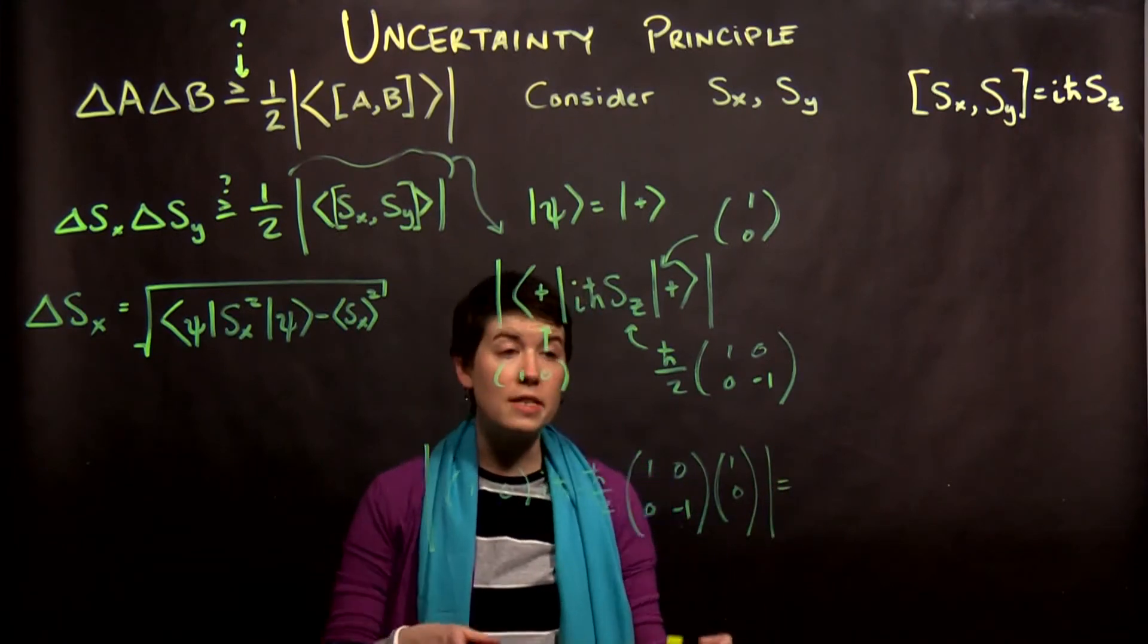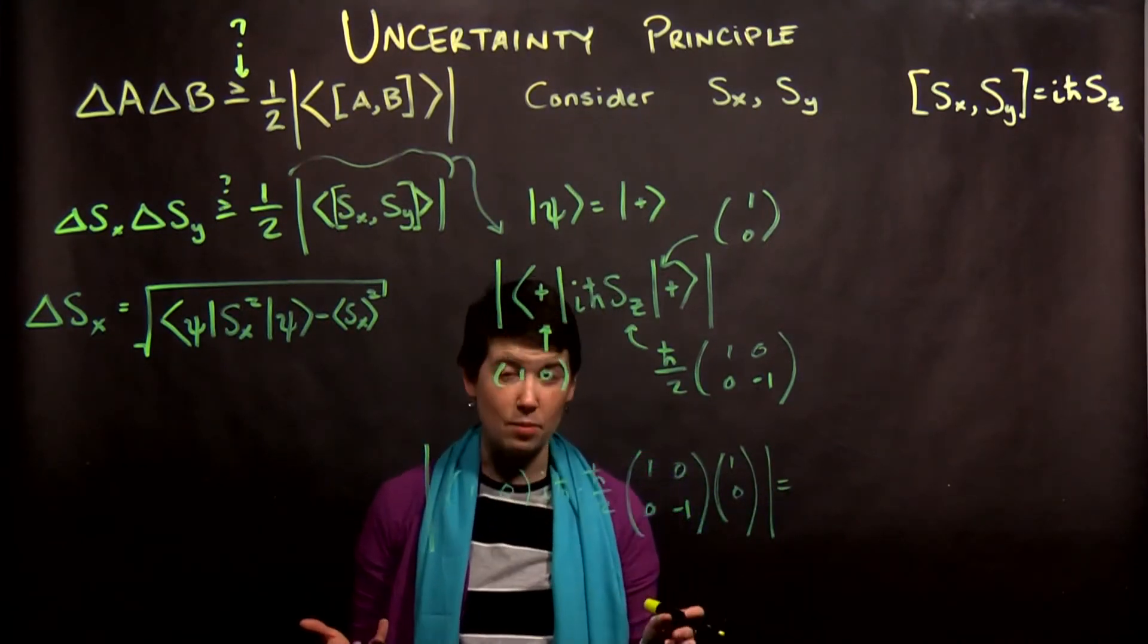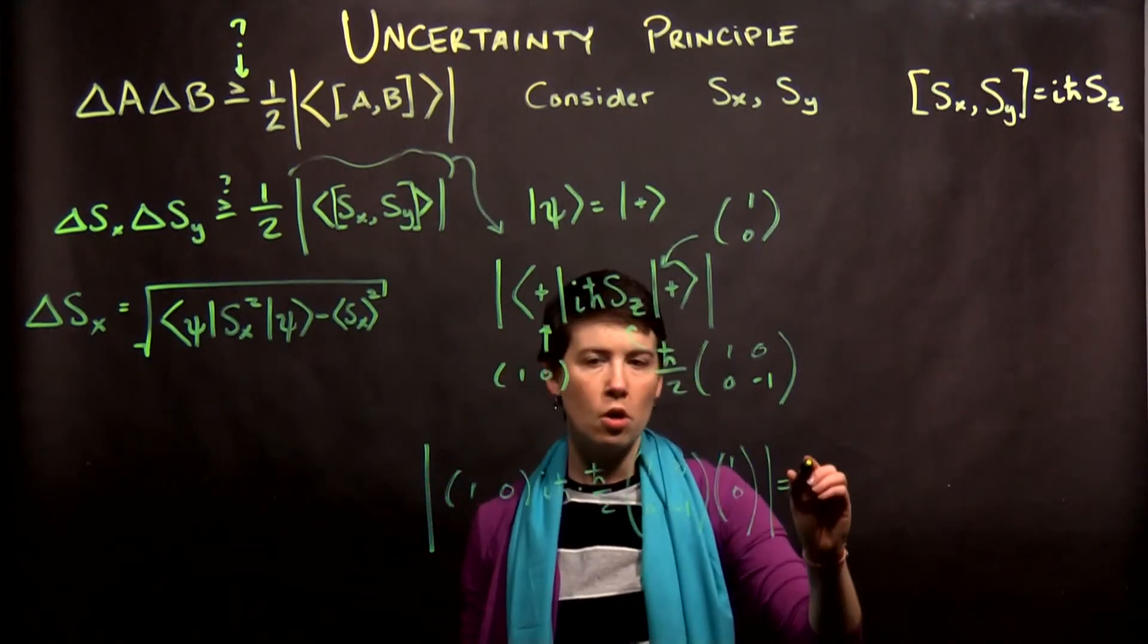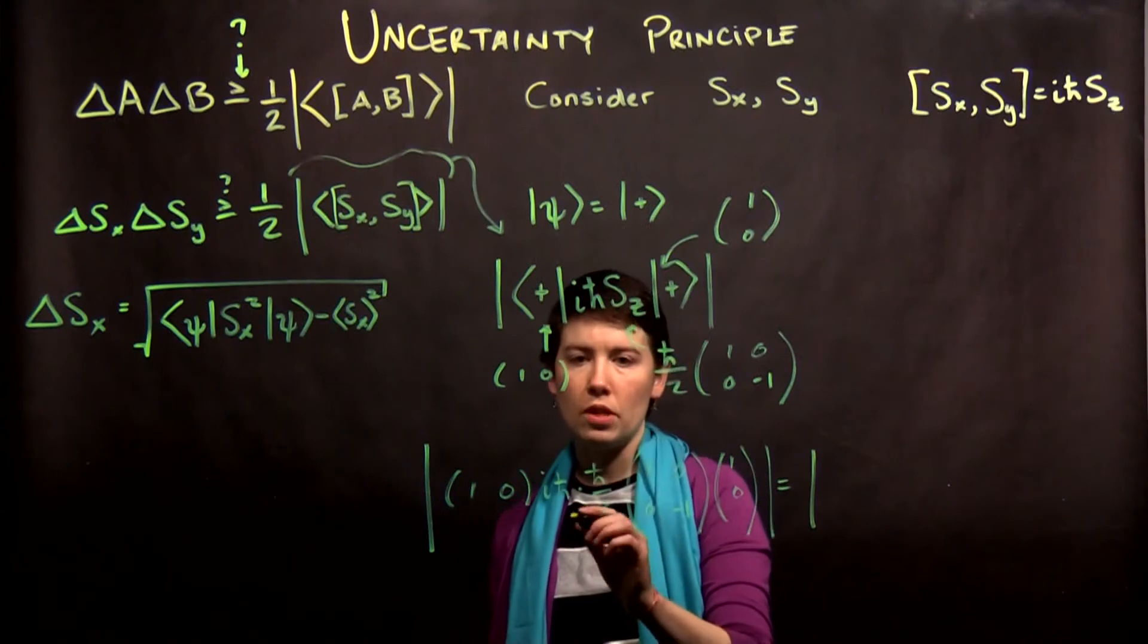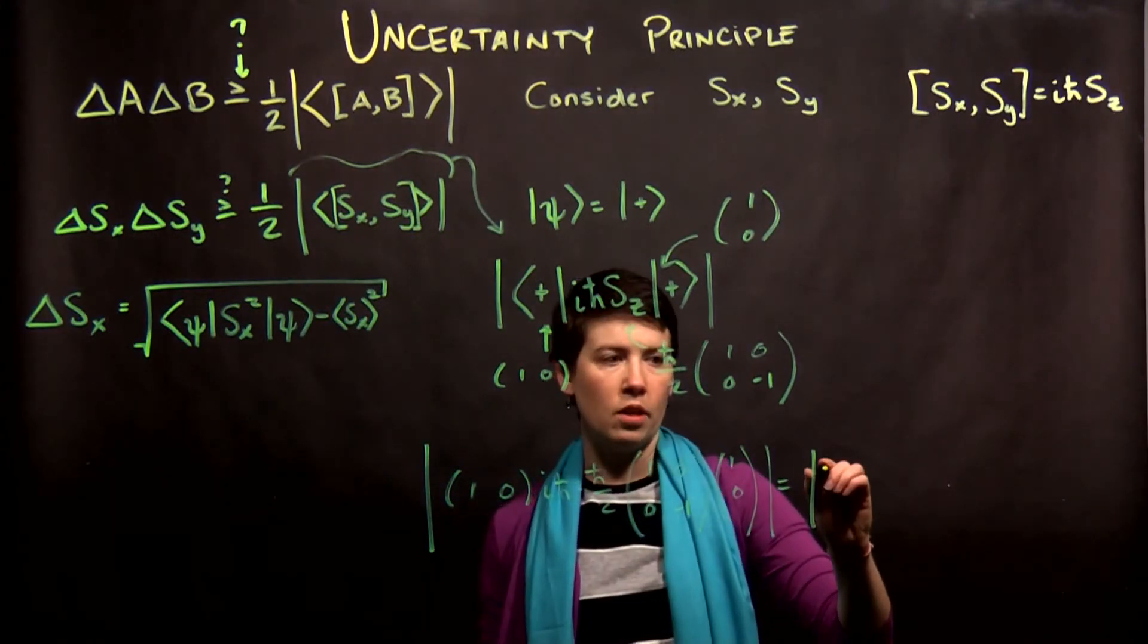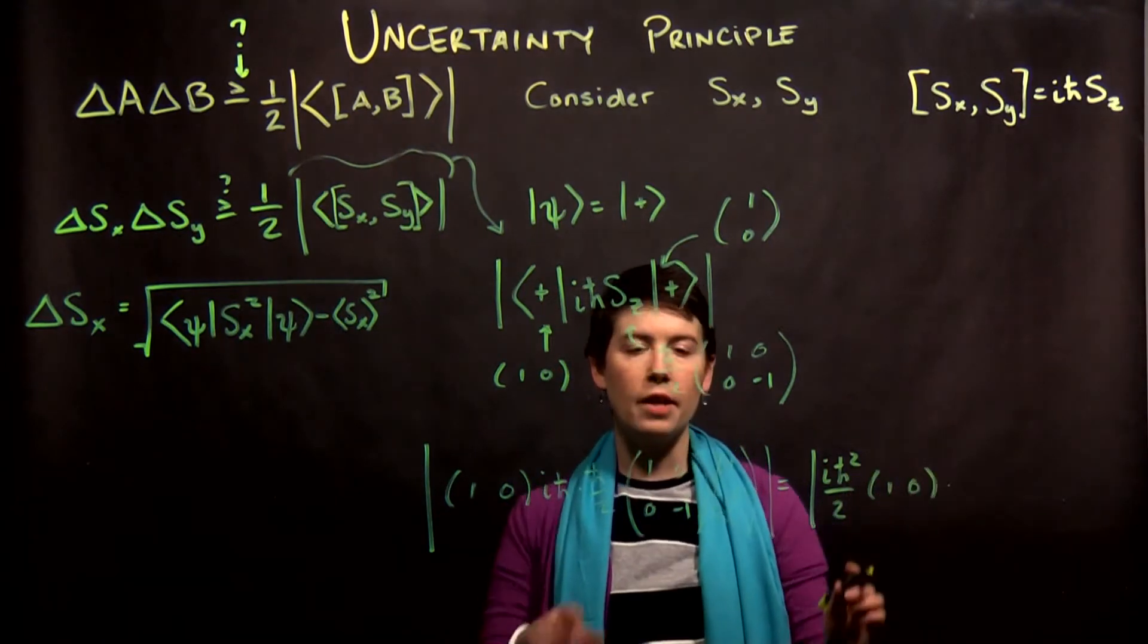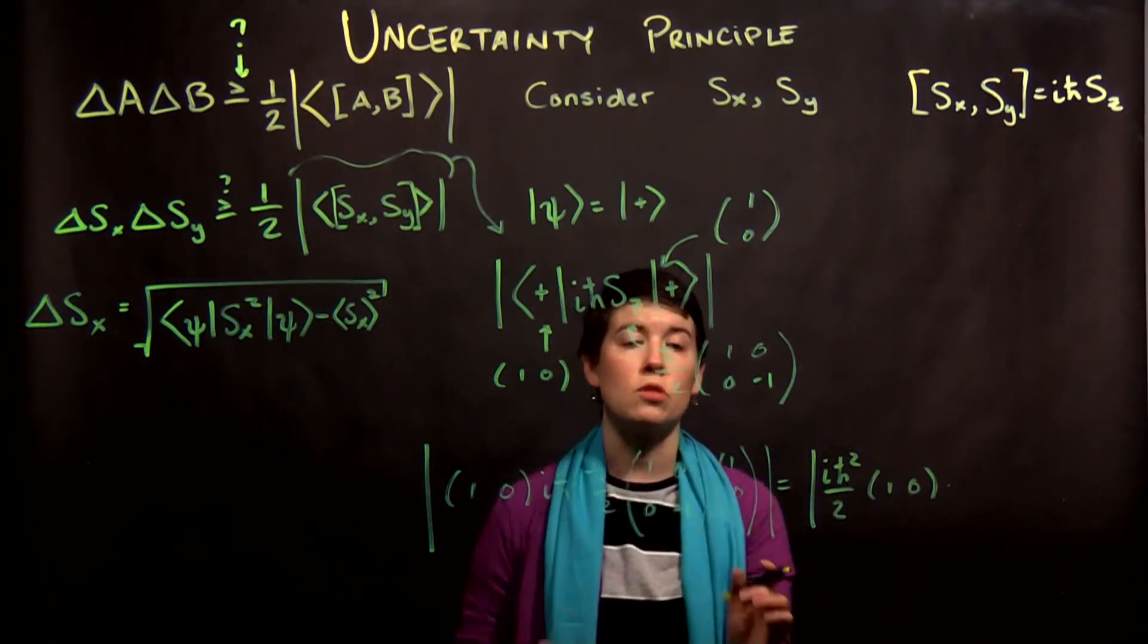Okay, and we need to get a scalar on the inside, this final magnitude step needs to be a scalar. It might be a complex scalar, but we need a scalar. So, notice that I'm going to have i h-bar squared over 2, 1, 0, and now, let's multiply these two objects out.